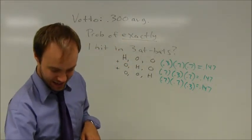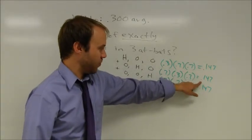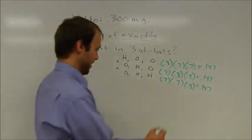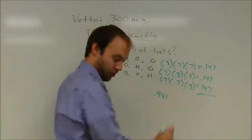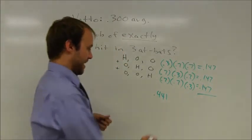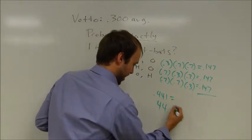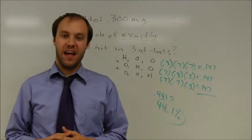And in the end, it's the probability of .147 or .147 or .147. ORs suggest that I add up my probabilities, and those probabilities end up adding up to .441. If you want to convert that to a percent, there's a 44.1% chance that he's going to get a hit in exactly one out of his three at-bats.